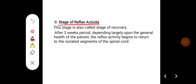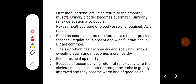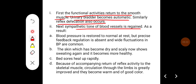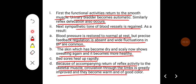The stage of reflex activity, also called the stage of recovery, begins after about three weeks, depending largely on the general health of the patient. Reflex activity begins to return to the isolated segments of the spinal cord. First, smooth muscle functional activities return — the urinary bladder becomes automatic and reflex defecation occurs. Sympathetic tone of blood vessels is regained, restoring blood pressure to normal at rest, though wide fluctuations are common. The skin shows sweating again, bed sores heal rapidly, and circulation through the limbs improves, making them warm with good color.